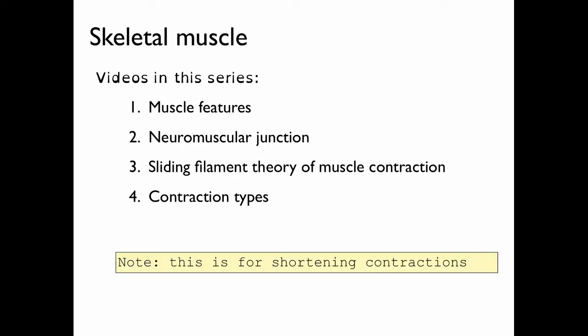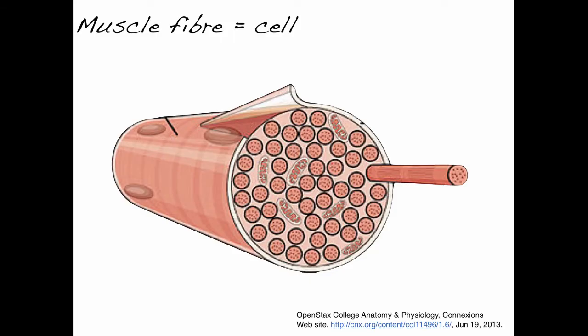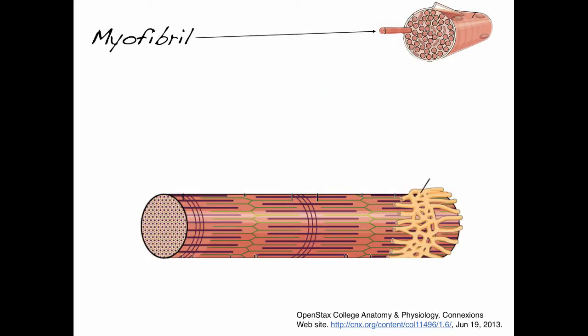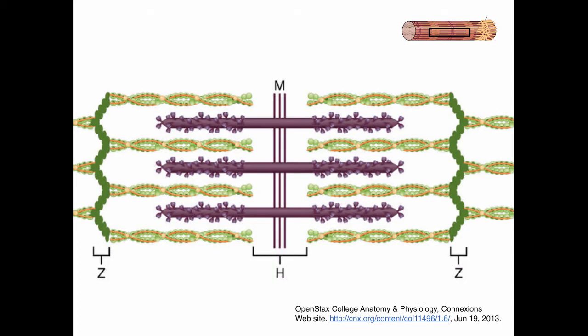Please note that I'm going to be discussing purely shortening contraction. Recall that the muscle fiber is the cell and that it's packed full of myofibrils. If we look closely at a myofibril, it will contain many protein filaments that form sarcomeres. Let's take a closer look at this sarcomere.